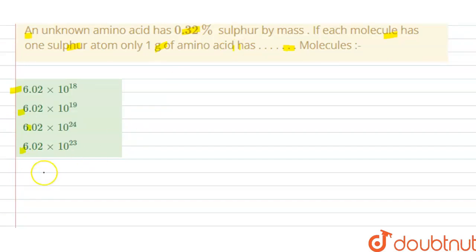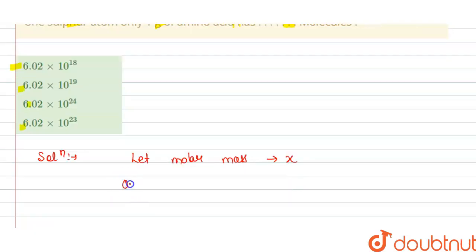So the solution of this question is: firstly, let the molar mass of unknown amino acid be x. So we have 0.32 percent, that is 0.32 divided by 100 multiplied by x...